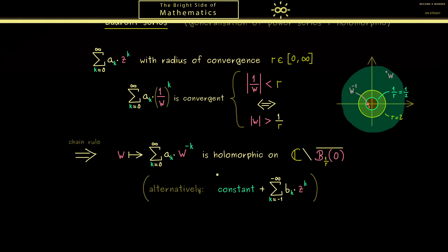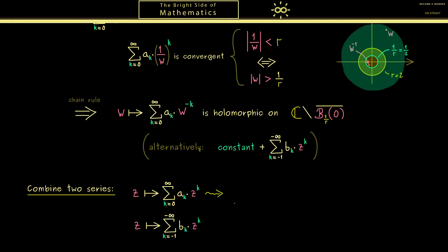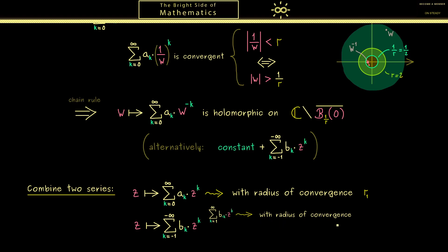Let's define this new function by combining the two series. First, the ordinary power series starting at 0 going to infinity; second, the new series starting at minus 1 going to minus infinity. Each power series has a well-defined radius of convergence — the first we call r1. For the second part we look at the inverted power series and call its radius r, so the relevant radius for us is 1 over r, which we call r2.